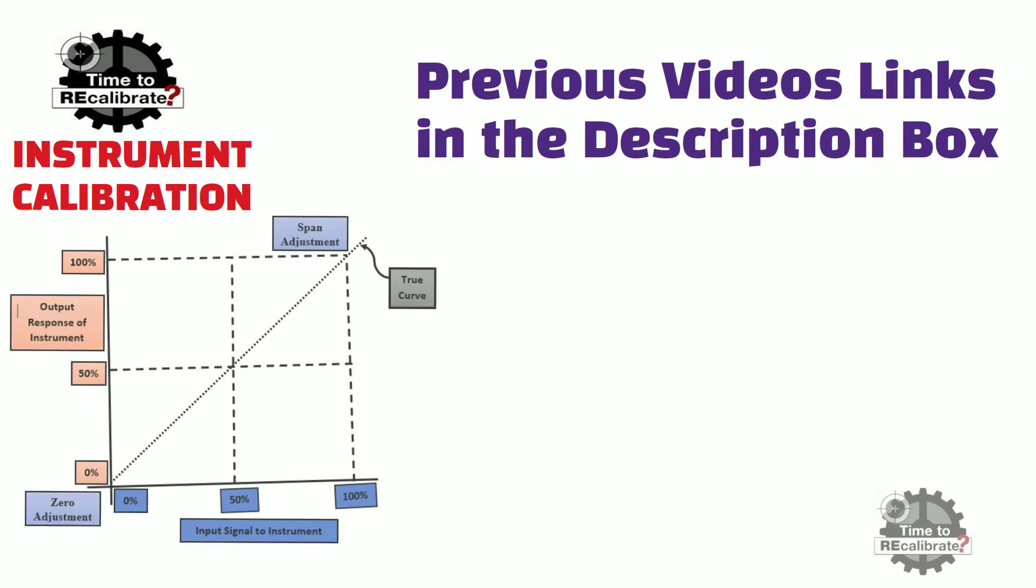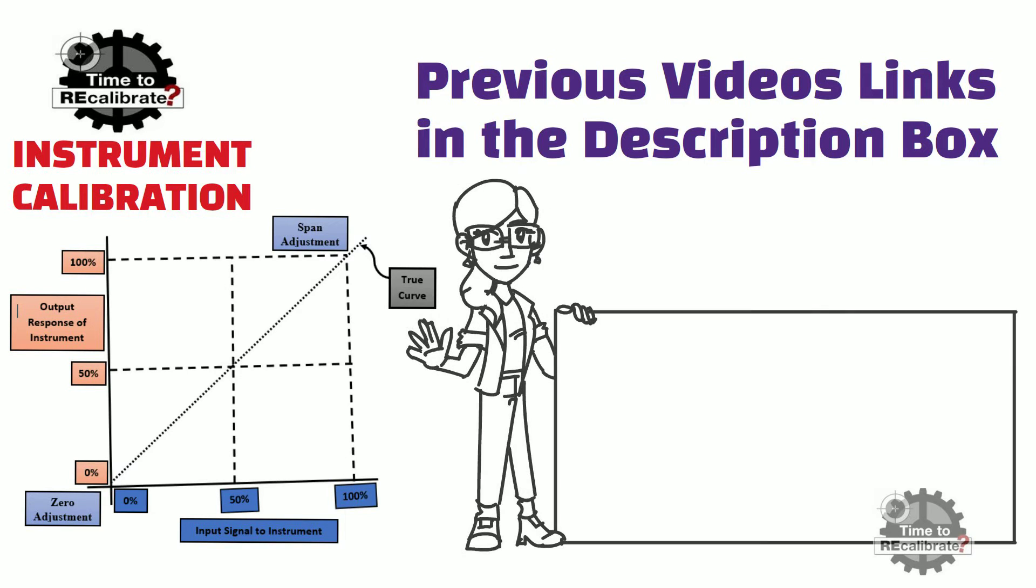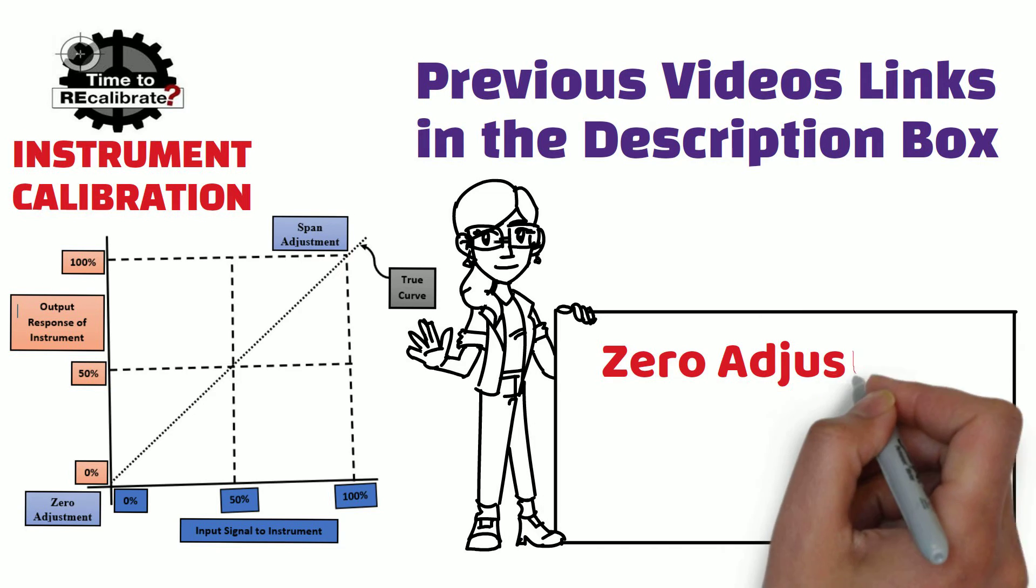Today's video is on some common terms which are used in the field of instrumentation and calibration. These common terms are zero adjustment and span adjustment.